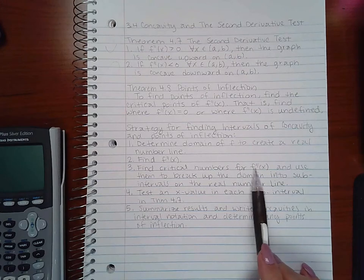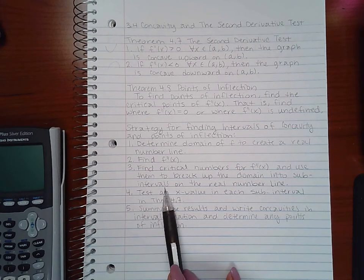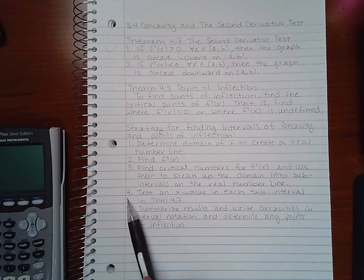3. Find critical numbers for f double prime and use them to break up the domain into subintervals on the real number line, the one you created from part 1. Then number 4.